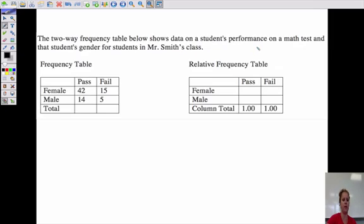So we have a two-way frequency table here shown on a student's performance on a math test and that student's gender from Mr. Smith's class. So there were 42 females that passed, 15 that failed, and 14 males that passed and 5 that failed. So now you would say there's a lot of females that passed, right?